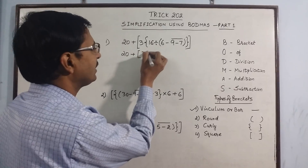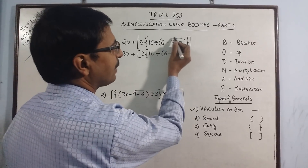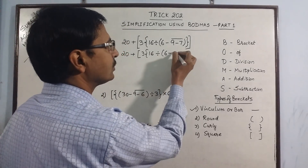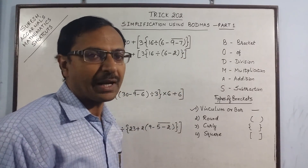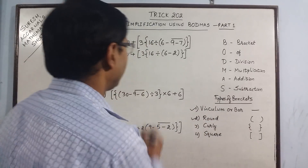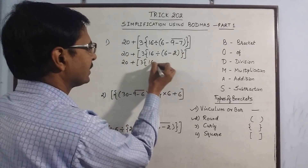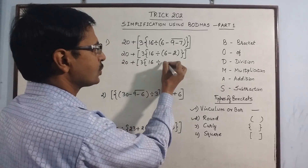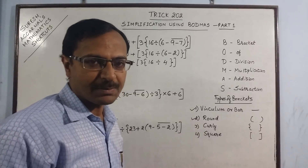Everything will remain the same except 9 minus 7, which has a bar over it. We solve it: 9 minus 7 is 2, and automatically the vinculum vanishes from our calculation. Once the vinculum is removed, look for the round bracket. Here is the round bracket — 6 minus 2 is in it, so 6 minus 2 equals 4. Now one more bracket has vanished from the simplification problem.